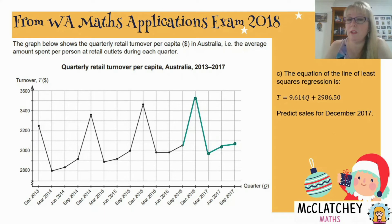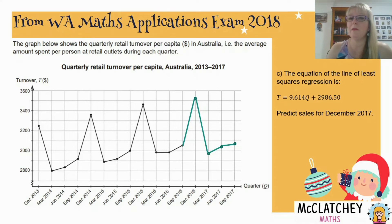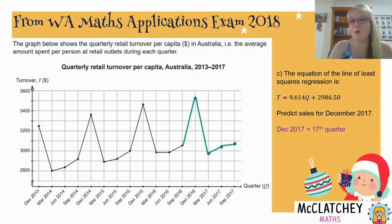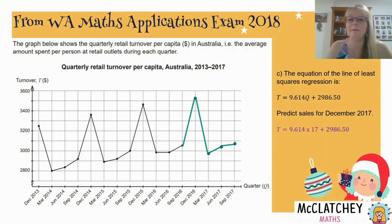The next question gives us an equation for the line, so we just need to predict sales for December 2017. That means we're extrapolating the data. Our 17th quarter is December 2017 — we have three years shown, so three times four is twelve, then adding another four gets us to sixteen, so December is the 17th quarter. That means Q equals 17. We substitute that into our equation and find that T equals 3,149.989 with further decimal places.